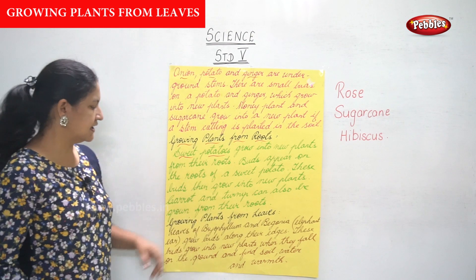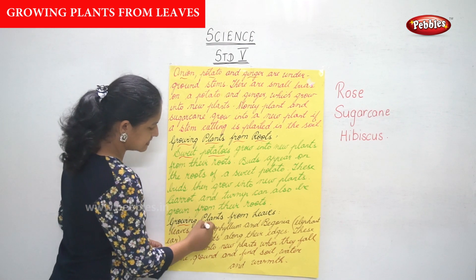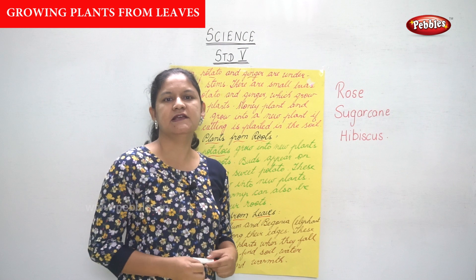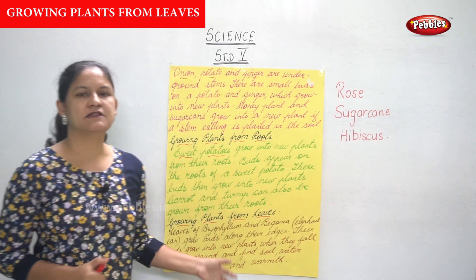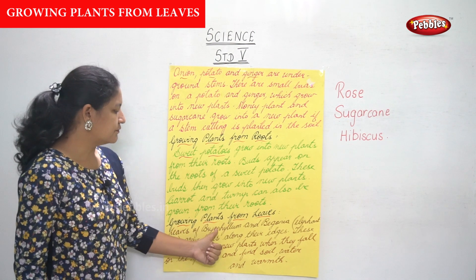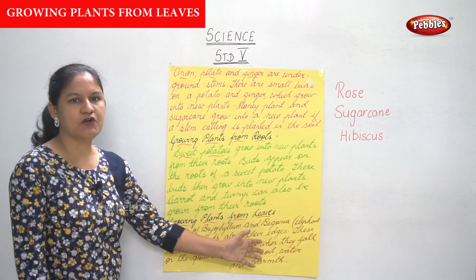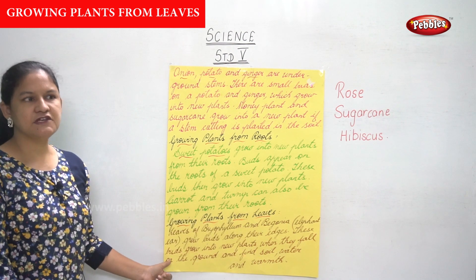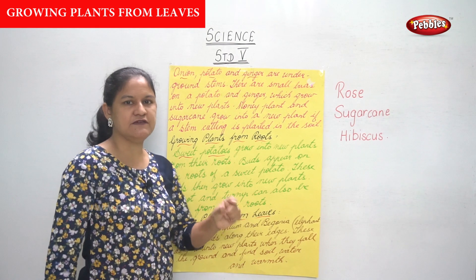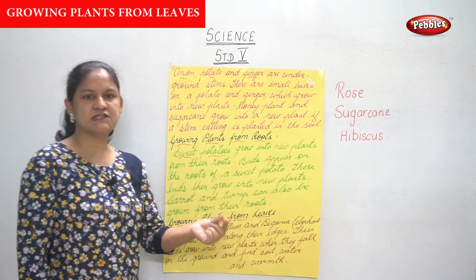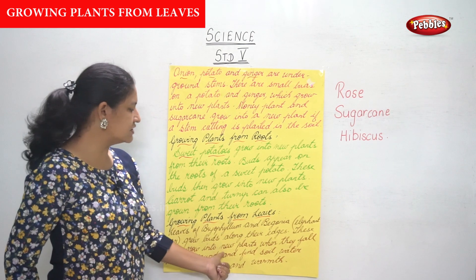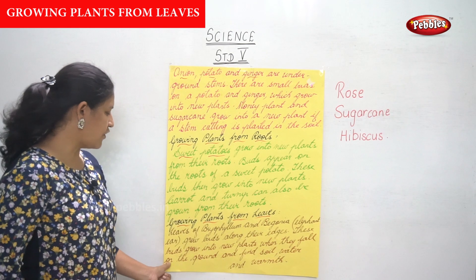Next is growing plants from leaves. Leaves of bryophyllum and begonia — also known as the elephant ear — grow buds along their edges. If you look at the leaves, you'll see buds found on the edges, and these buds grow into new plants when they fall on the ground.